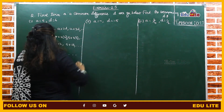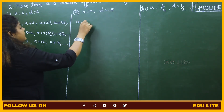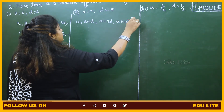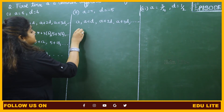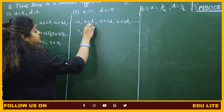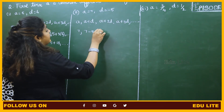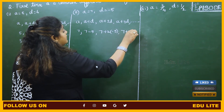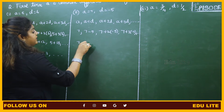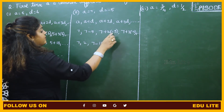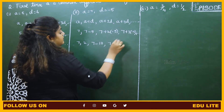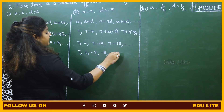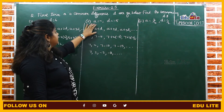For the second subdivision, A is 7 and D is minus 5. Using the AP formula: 7, then 7 plus (minus 5) equals 2, then 7 plus 2 into (minus 5) equals 7 minus 10 equals minus 3, then 7 plus 3 into (minus 5) equals 7 minus 15 equals minus 8. So the AP is 7, 2, minus 3, minus 8, and so on.